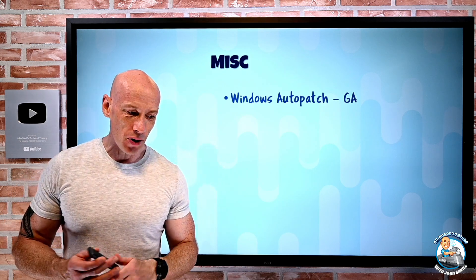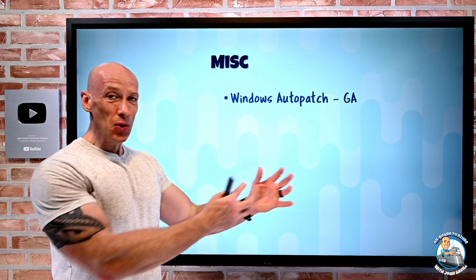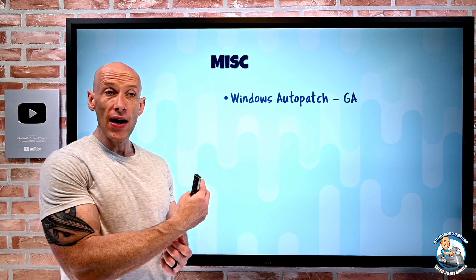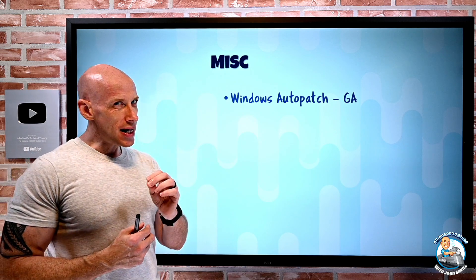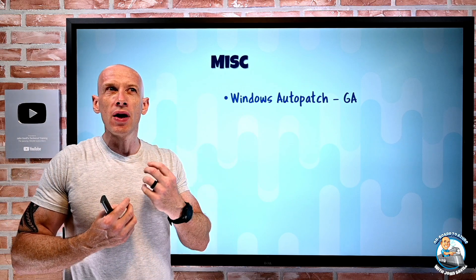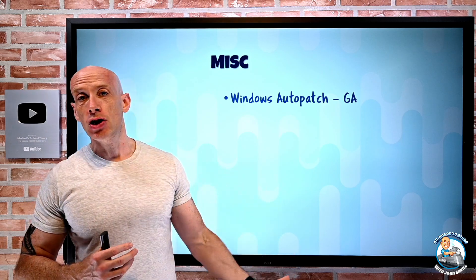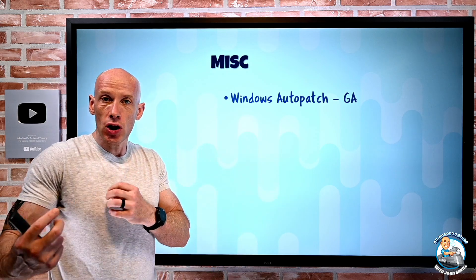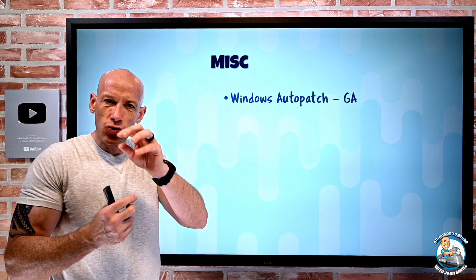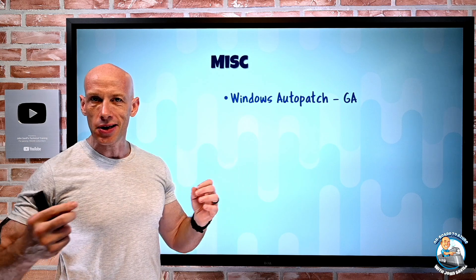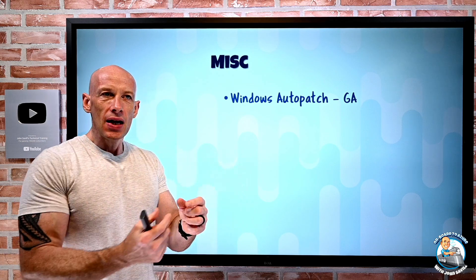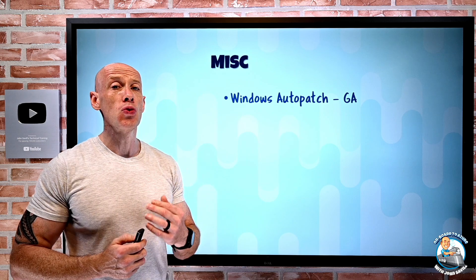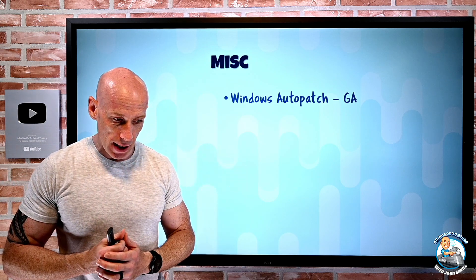Miscellaneous: Windows Auto Patch has gone GA. We're used to the idea of Patch Tuesday — all the patches come out, and inside the Windows OS you can configure automatic download and application. But for an organization, that's not typically attractive — what if a patch causes a problem with an application or process? Instead, organizations prefer rings of deployment: some test machines, then early preview users from business units who test functionality, then a bigger subset, and then broad deployment. You need a management tool for that — organizations might use Configuration Manager.